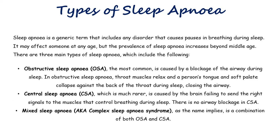Now coming to the types of sleep apnea. Sleep apnea is a generic term that includes any disorder that causes pauses in breathing during sleep. It may affect someone at any age, but the prevalence increases beyond middle age. There are three types: firstly, obstructive sleep apnea, the most common, caused by a blockage of the airway during sleep, where throat muscles relax and the tongue and soft palate collapse against the back of the throat. The second is central sleep apnea or CSA, which is much rarer, caused by the brain failing to send the right signals to the muscles that control breathing. There is no airway blockage in CSA.